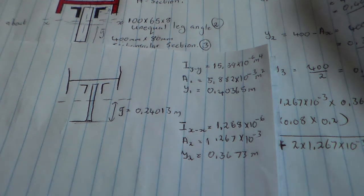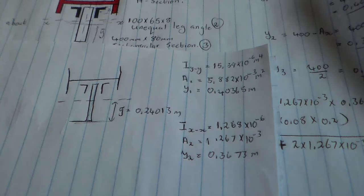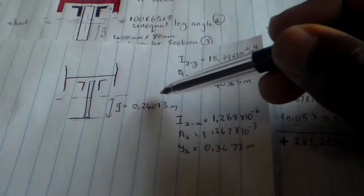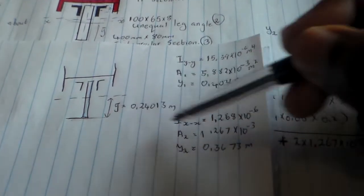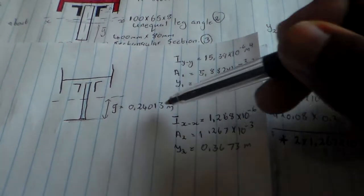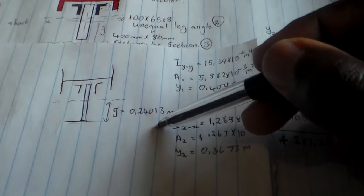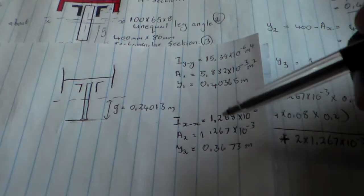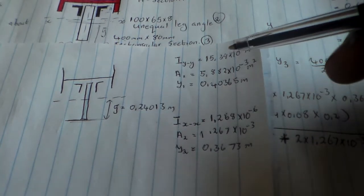Continuing from our previous example, we now find the neutral axis — the position of the neutral axis — the centroid of our beam. So this is our neutral axis, or the centroid, or the center of the beam.